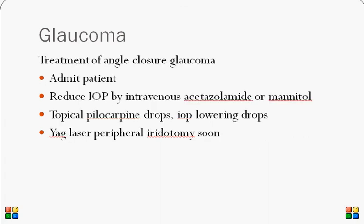To treat angle closure glaucoma, patients must be admitted as it is a vision-threatening emergency. Intraocular pressure is reduced by giving intravenous acetazolamide — a carbonic anhydrase inhibitor — or mannitol, which is a diuretic. Topical pilocarpine drops and other IOP-lowering drops are also started. The definitive treatment is YAG laser peripheral iridotomy, where an opening is created in the peripheral part of the iris to allow aqueous drainage.